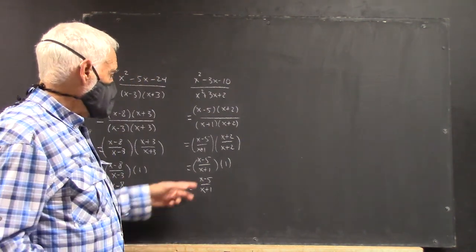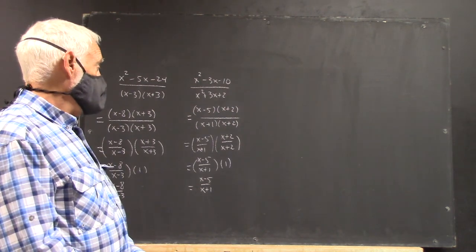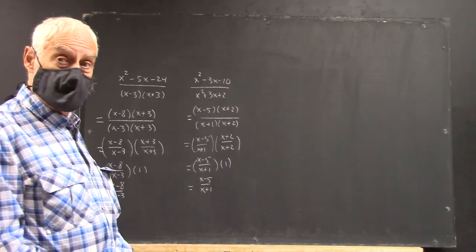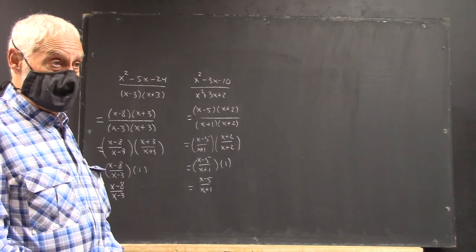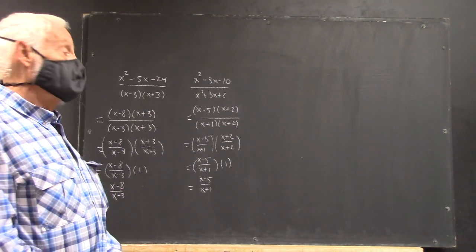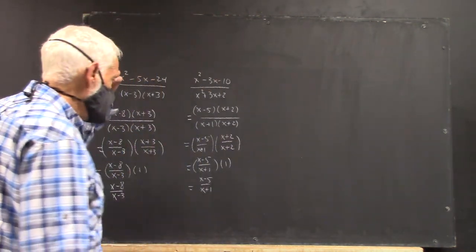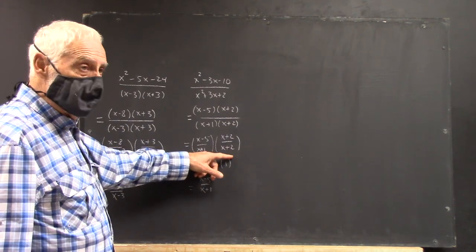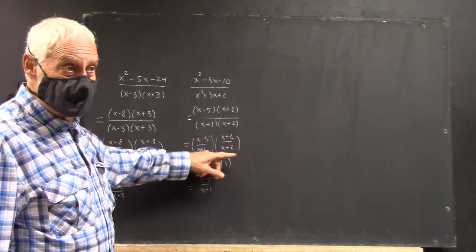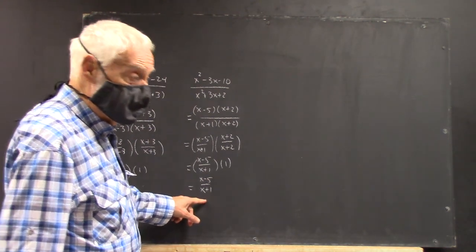Now, if you get down to this correctly, okay? If you do one wrong cancellation, the whole problem is wrong. No partial credit. Okay? So don't risk cancellation. Use the rules. Okay? The rules that work, which is get the expression over itself by factoring, and then set it equal to 1, and then simplify.